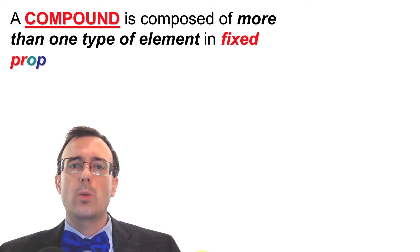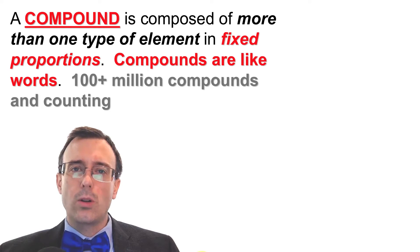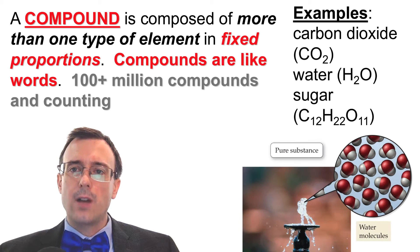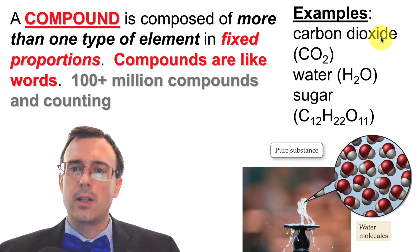A compound is composed of more than one type of element in fixed proportions. Compounds are like words — there are over 100 million different compounds known today, and new compounds are being discovered or created every single day. Elements, which are like letters, come together in different ways to make a whole bunch of different compounds. Some examples of compounds are carbon dioxide (CO2), water, and sugar. You can tell carbon dioxide is not an element because it's got two different element names right in its name — carbon and oxygen — and the formula has both C and O, two different elements.